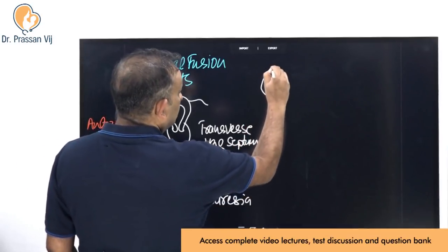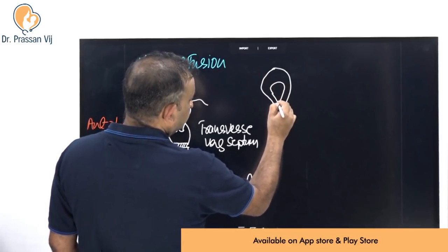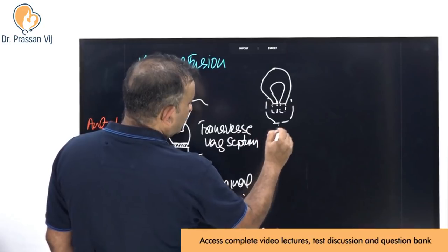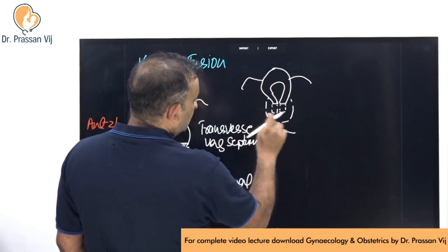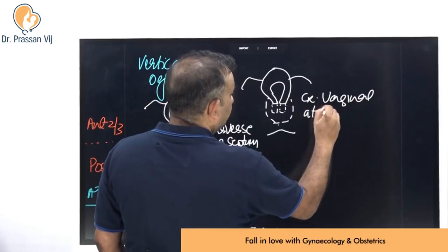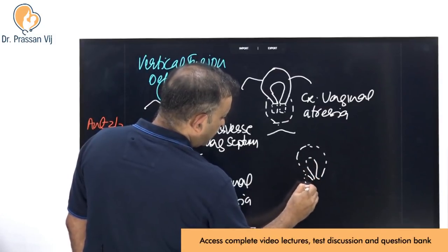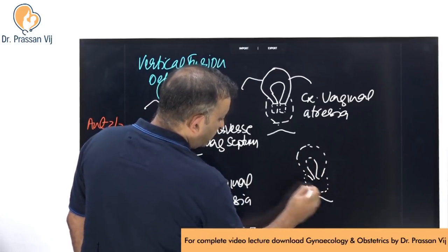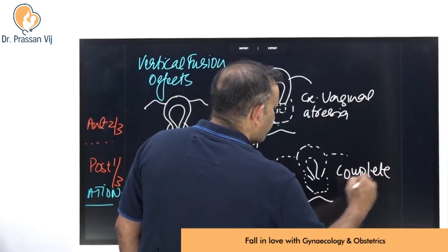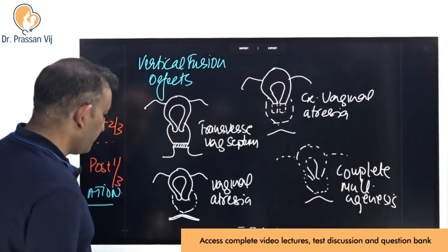Or the uterus is formed but the cervix is not formed properly — the cervix and upper vagina are obliterated and only the lower vagina is made — this is cervicovaginal atresia. The worst form is when the whole uterus, cervix, and vagina are obliterated and only a shallow blind vagina is made — this is complete Müllerian agenesis. These are the vertical fusion defects.